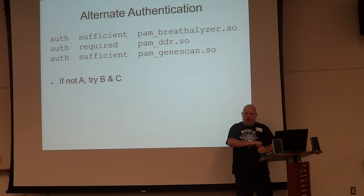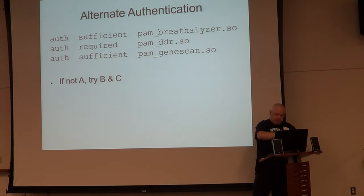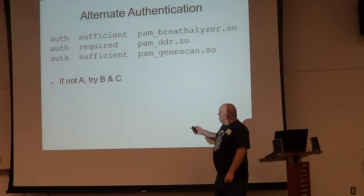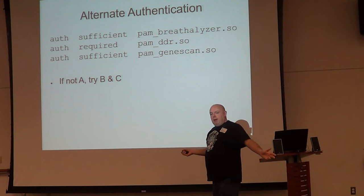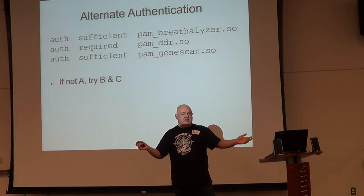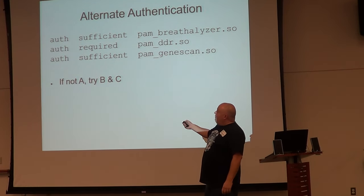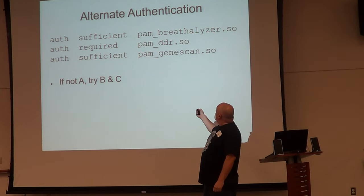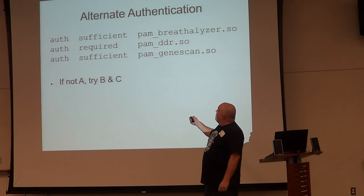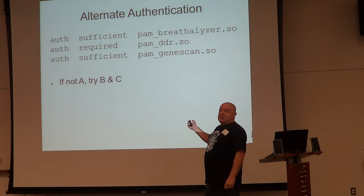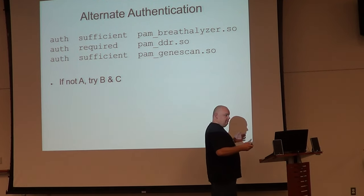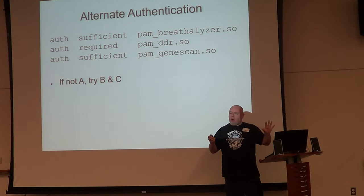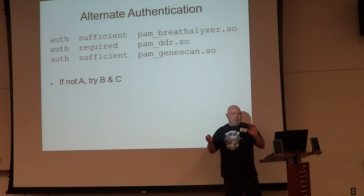Sufficiency lets you do some fun things. Our first authentication method, the breathalyzer, is sufficient. If they pass the breathalyzer, authentication is permitted and rule processing stops. If that fails, we have a required and the AND is sufficient. So either the user must pass the breathalyzer, or they must pass the DDR tablet and the gene scanner. This allows: if not A, then both B and C. This is the simplest pure PAM method of doing it.